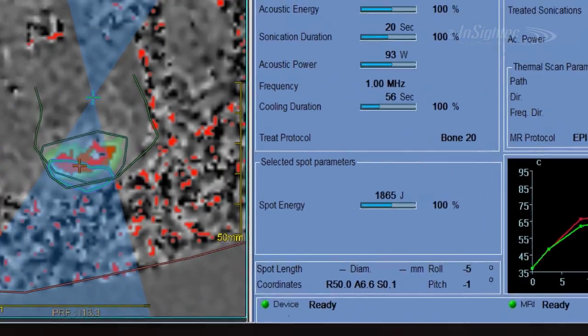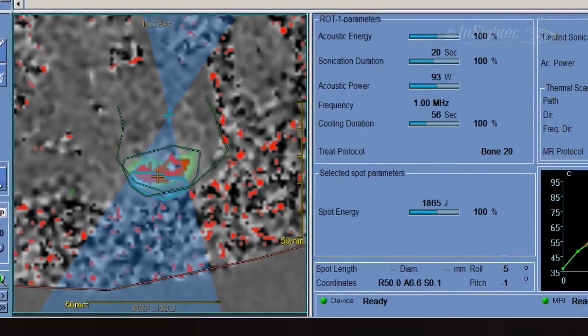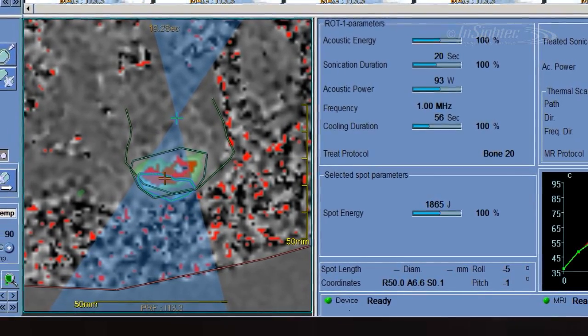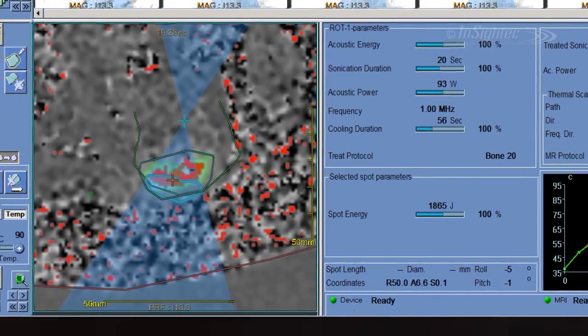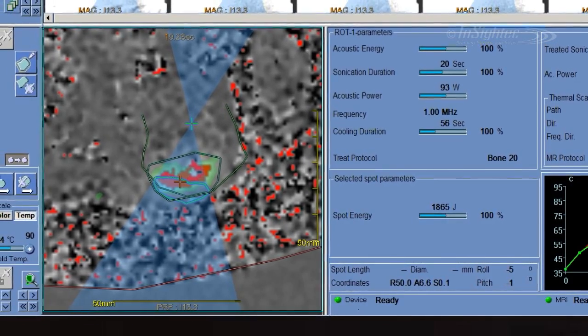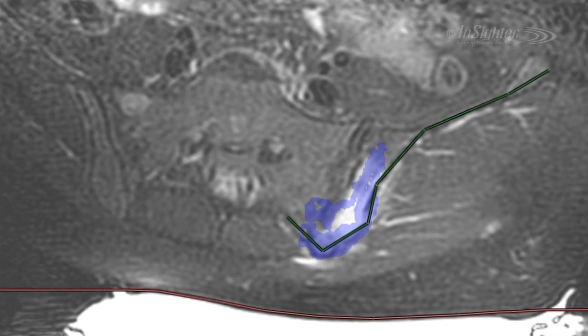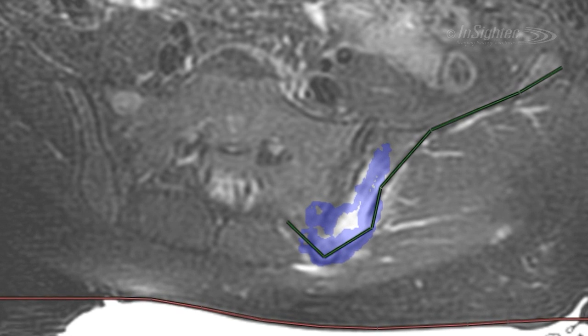After each sonication, the accumulated dose is displayed. The physician knows immediately if the focused ultrasound energy has reached the planned spot and temperature. After each sonication, the ablated area is displayed in blue as accumulated thermal dose.